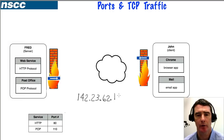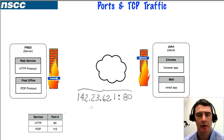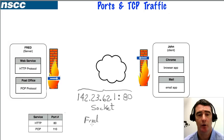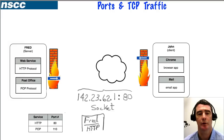When a packet goes out it has an IP address and a port number attached to it. Together this is called a socket, and you need both for communications. We're going to represent this by indicating the IP address of where the packet is going and the service it's targeting, rather than using raw numbers.